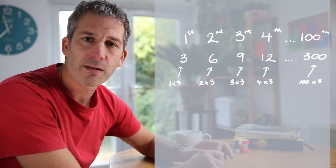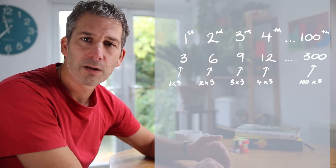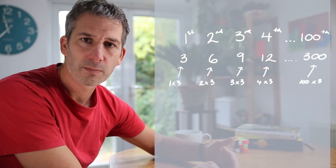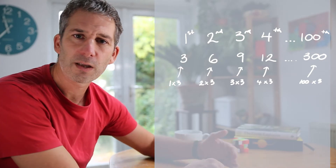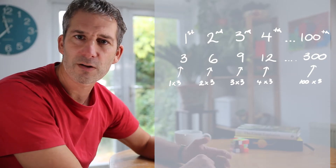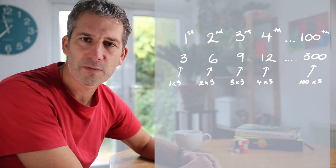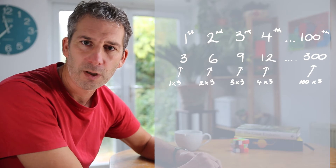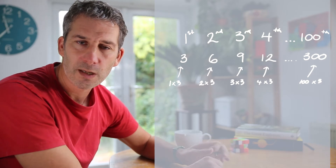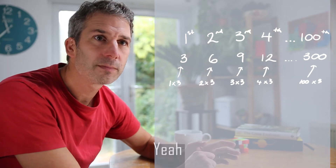If you wanted the millionth term of the three times table, it's three lots of a million — three times a million — so it would be three million. Okay, happy with that? Yeah. Right.